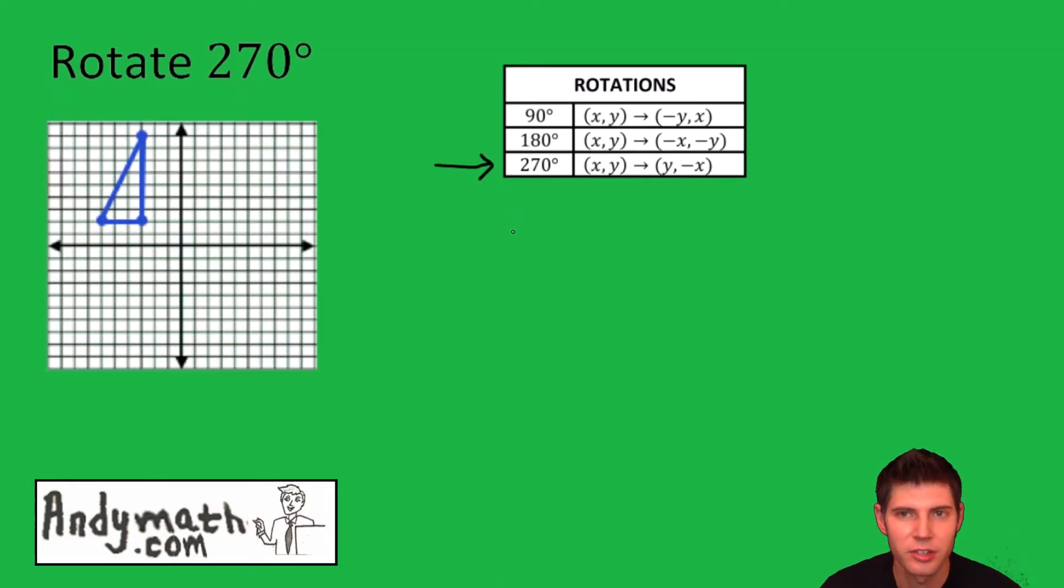So first step, we want to write down the three points of our pre-image, the three points of the image that we're given. It's negative three two, negative six two, and negative three nine.